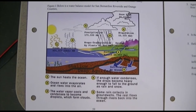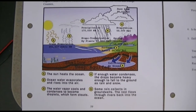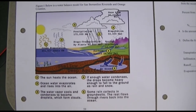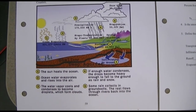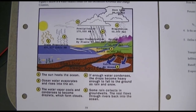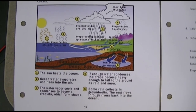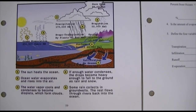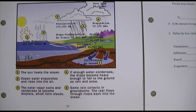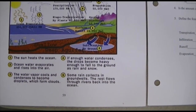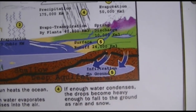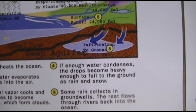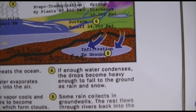We have ocean evaporation at 450,000 cubic kilometers, shown by number one. As that warm moist air rises it's going to condense, cool, form clouds, and result in precipitation. Precipitation over the land is 175,000 cubic kilometers and evaporation over the landscape is 50,000 cubic kilometers. Precipitation at 175,000 is number three.